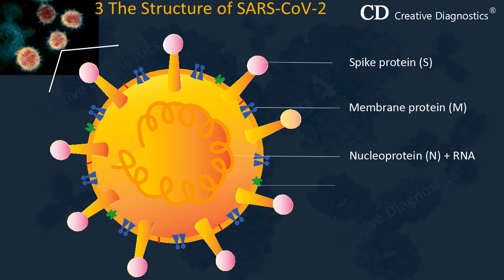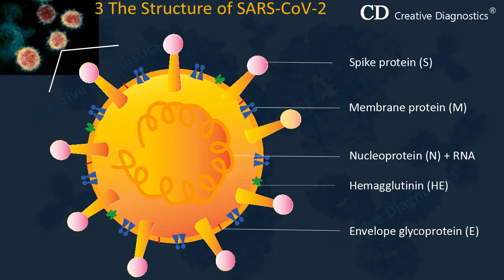The hemagglutinin esterase glycoprotein (HE) is found only in SARS-CoV-2. The hemagglutinin moiety binds to neuraminic acid on the host cell surface, possibly permitting initial adsorption of the virus to the membrane. The small envelope E protein leaves its C-terminus inside the envelope and then either spans the envelope or bends around and projects its N-terminus internally.